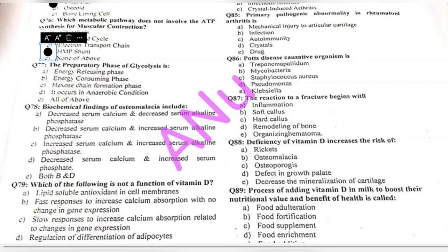Question 77: the preparatory phase of glycolysis is — energy releasing phase, energy consuming phase, hexose chain formation phase, occurs in anaerobic conditions, or all of the above? In the preparatory phase, energy is utilized for substrate-level phosphorylation of glucose, so it is called the energy consuming phase.